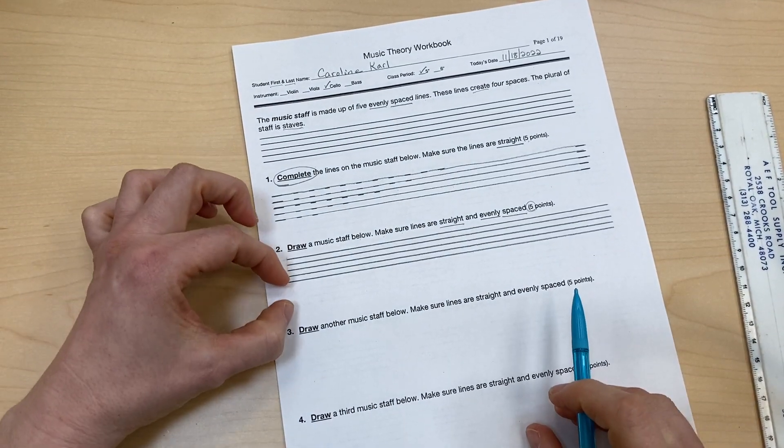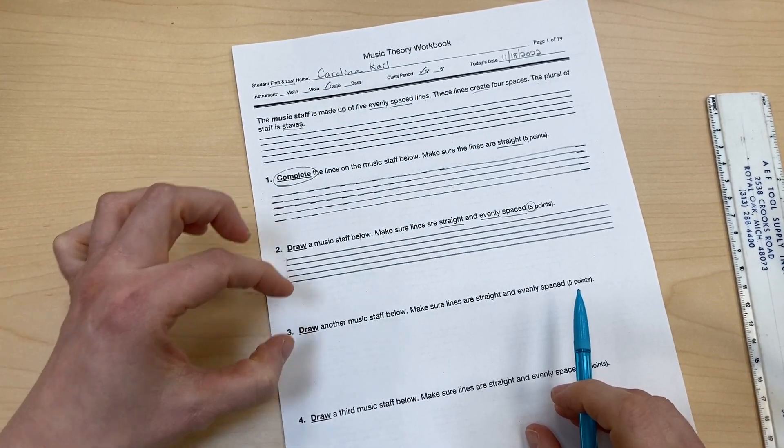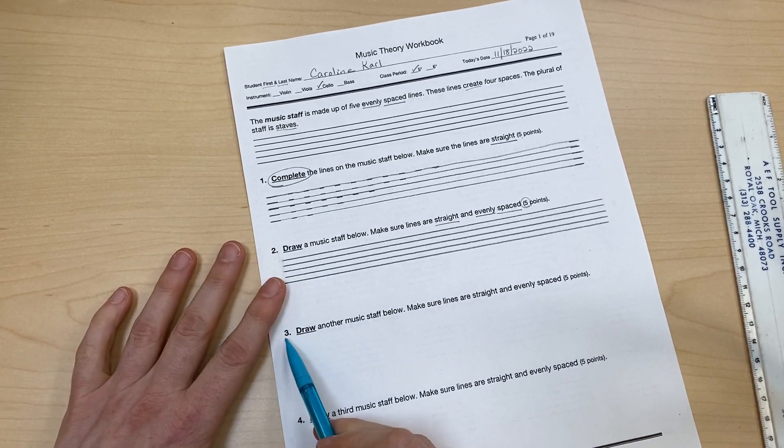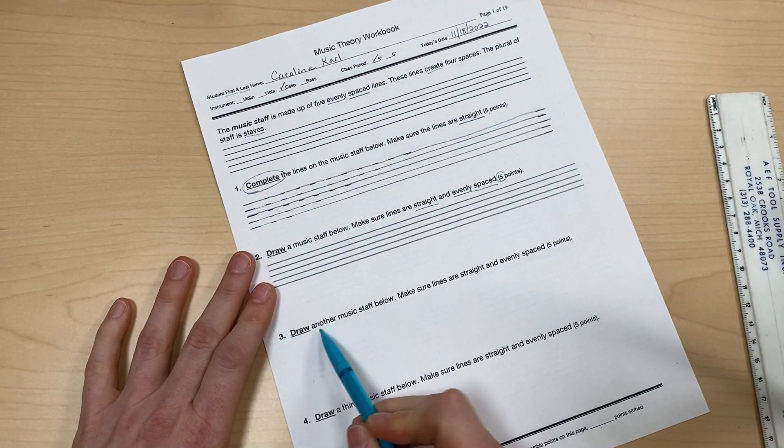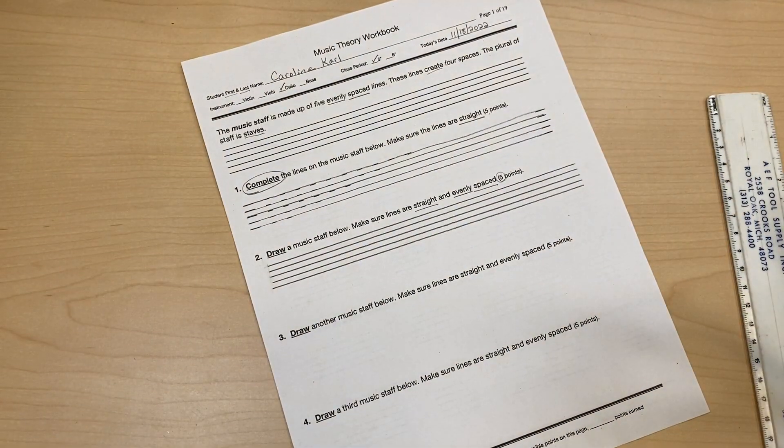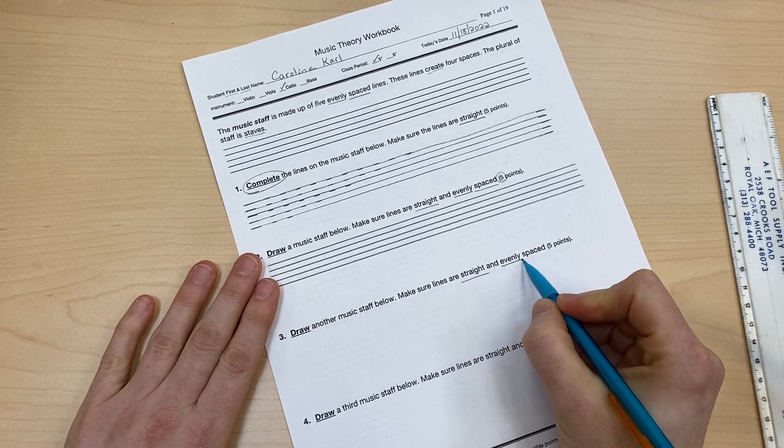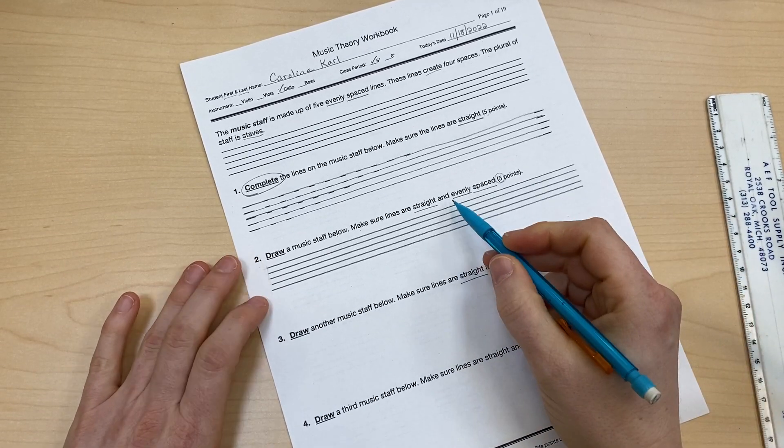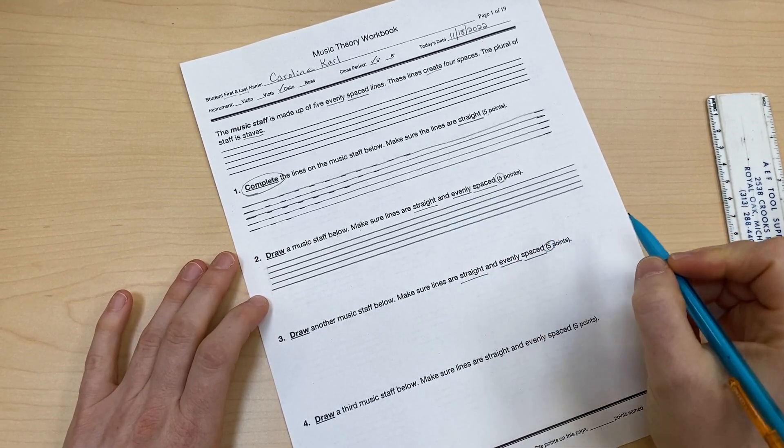Now, the other thing I'm noticing is I could have moved it down a little bit into the space. So on the next one, number three: draw another music staff below. And on this one, I'm going to make sure the lines are straight and evenly spaced again, just like in number two. And this is going to be worth five points as well.